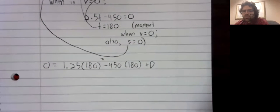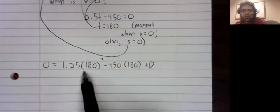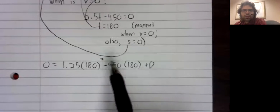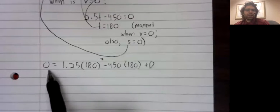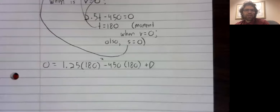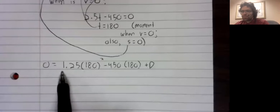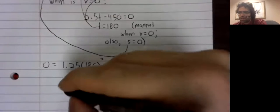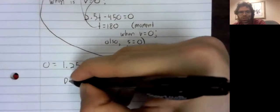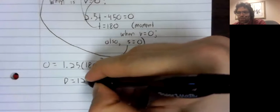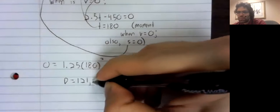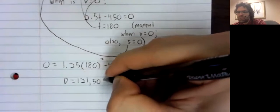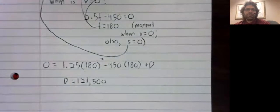And now to find D, we just subtract this over here and add this. And we plug all of this into our calculator. D equals 121,500.